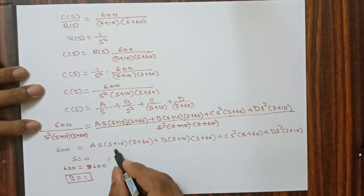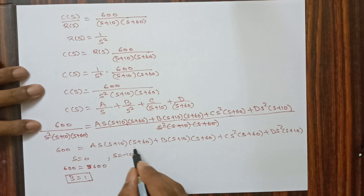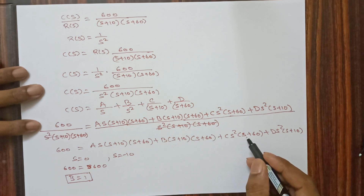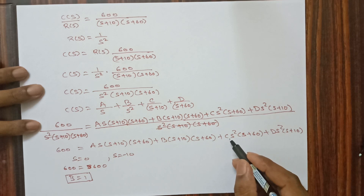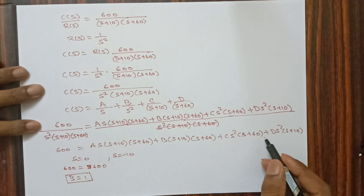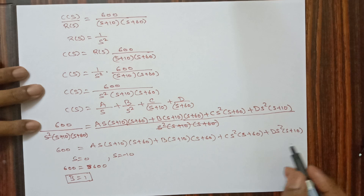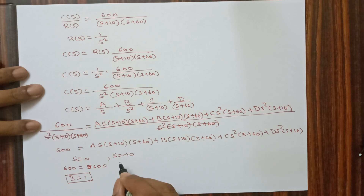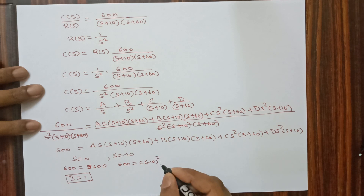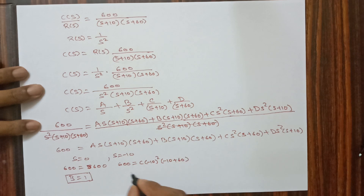Next, setting s = -10: the A, B, and D terms become zero, leaving 600 = C × (-10)² × (-10+60) = C × 100 × 50. Solving this gives C = 0.12.